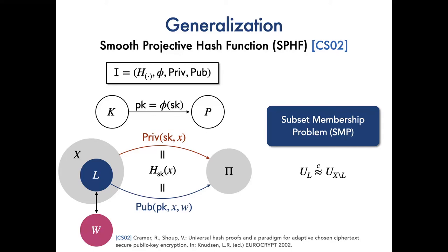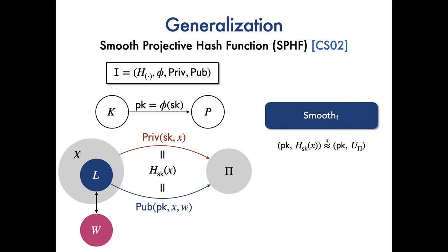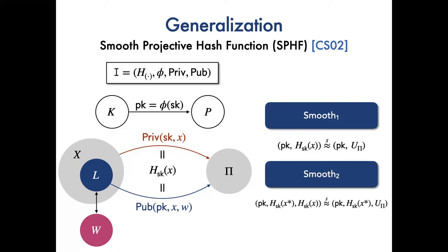For any language element X in L, each hash value H_SK(X) could be efficiently computed using either the hashing key SK or the projection key PK with the witness W to the fact that X belongs to L. Every SPHF should be smooth one. That is to say, conditioned on fixed projection key PK for any non-language element X, its hash value is statistically indistinguishable from the uniform distribution over the space Pi.